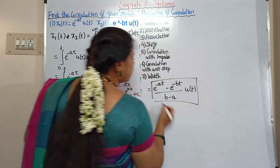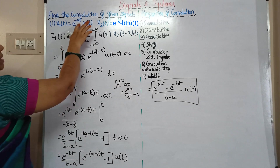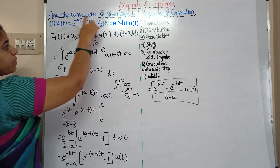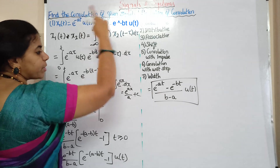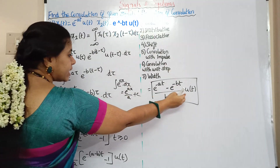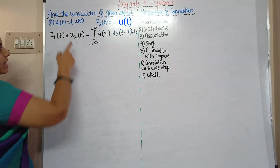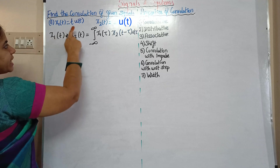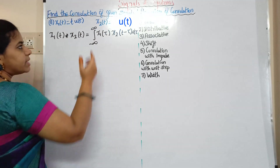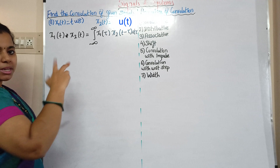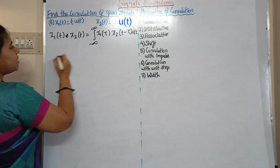So the final answer is: e to the power minus a·t minus e to the power minus b·t, divided by b minus a, into u of t. For the second problem, x1 of t equals t into u of t, and x2 of t equals u of t. This one is very easy to calculate.